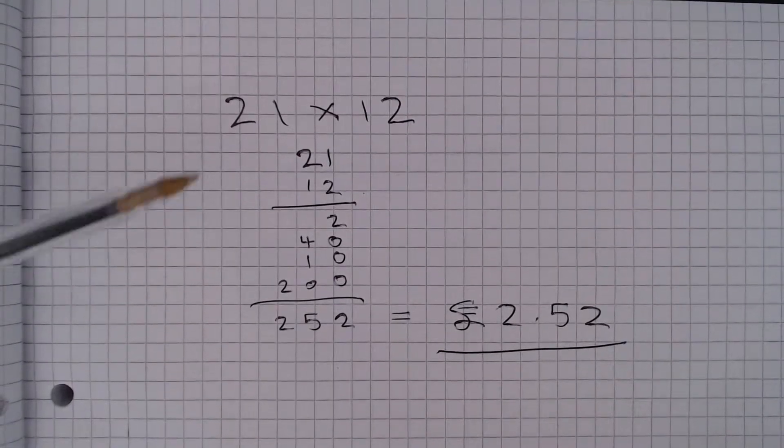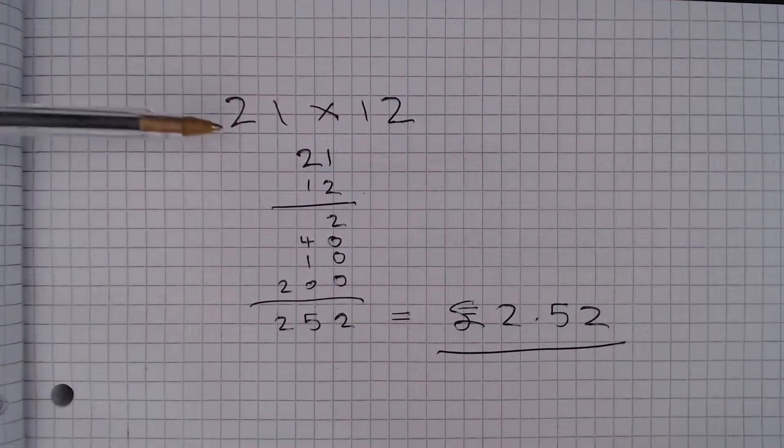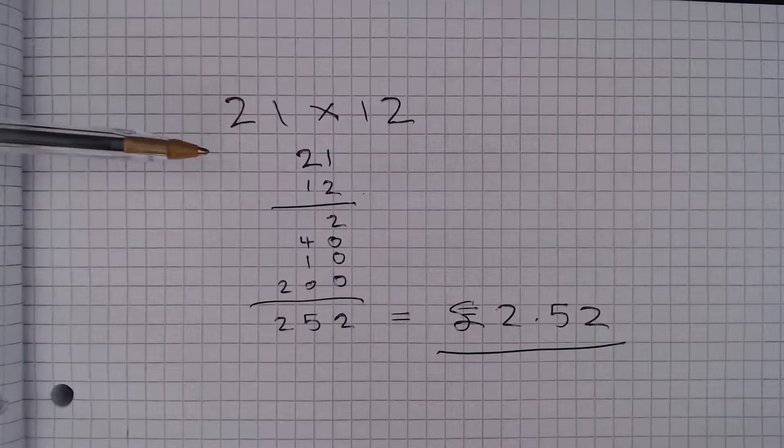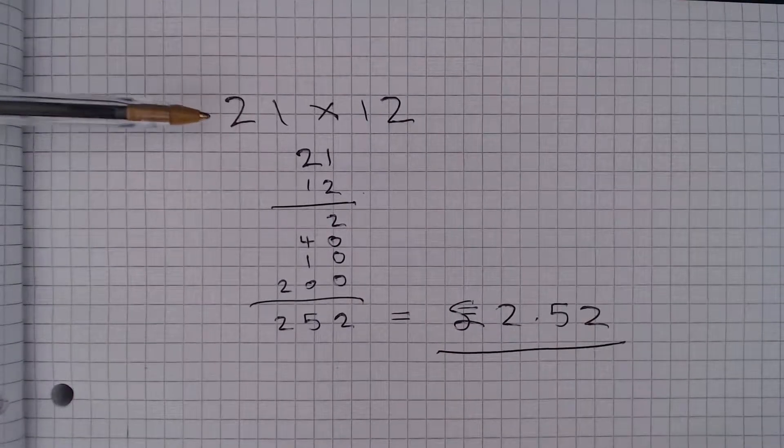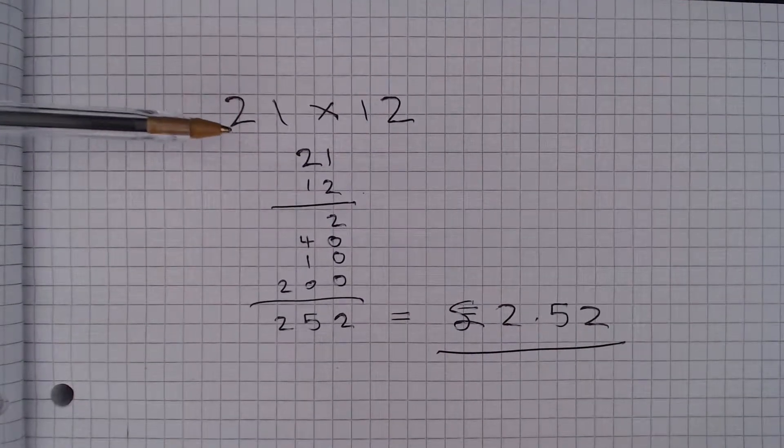Now if you wanted to avoid writing anything down here, you could just have a look at this. So we've got 12 times 21, well that's 12 times 20 plus another 1.